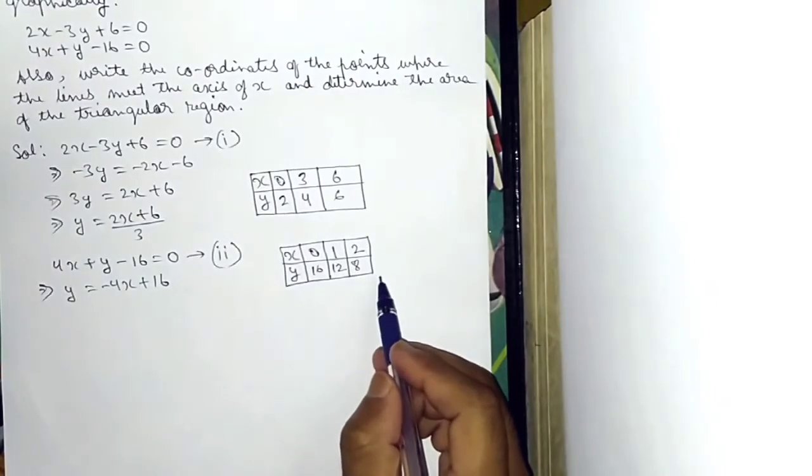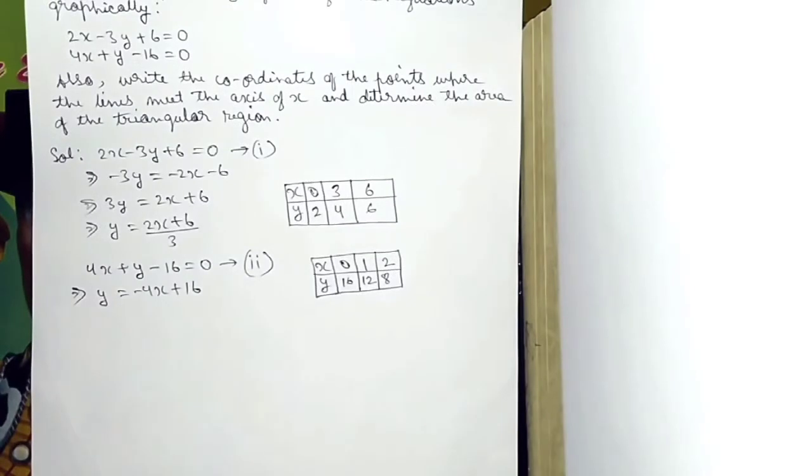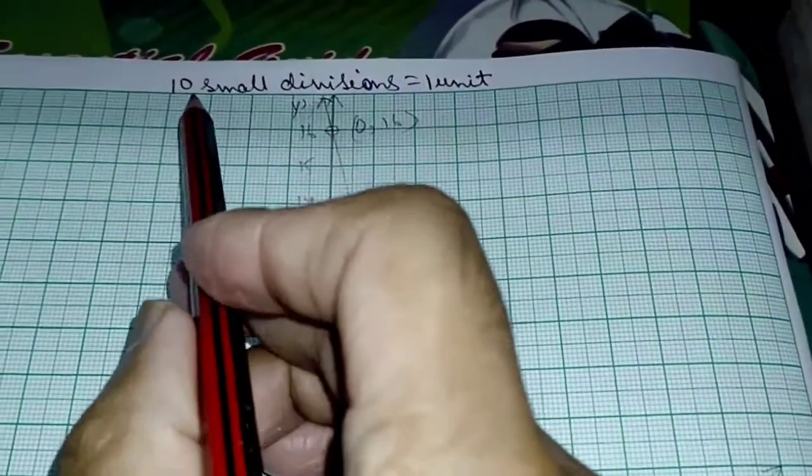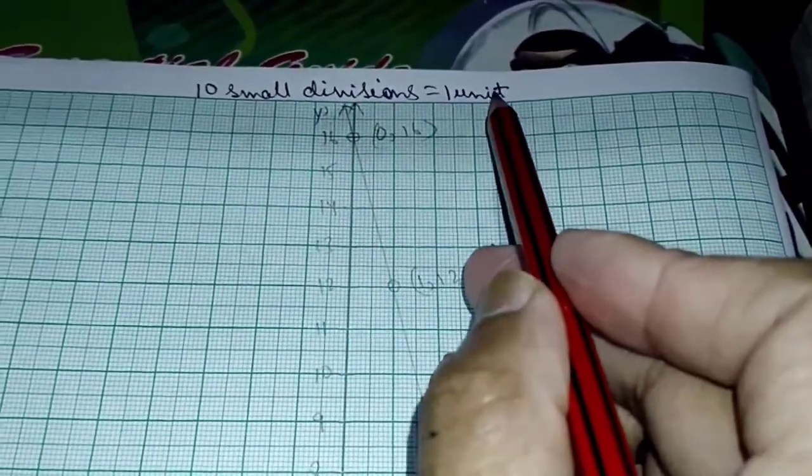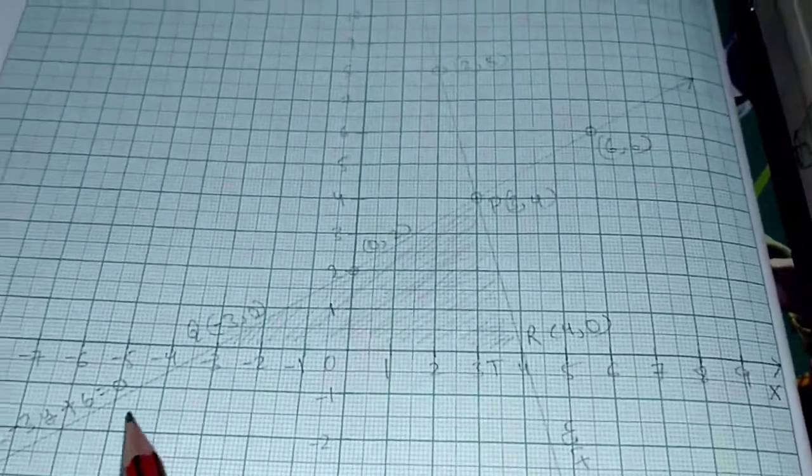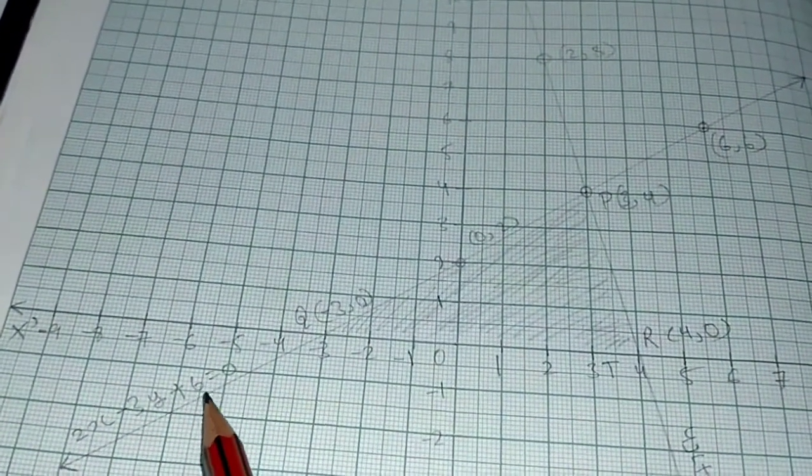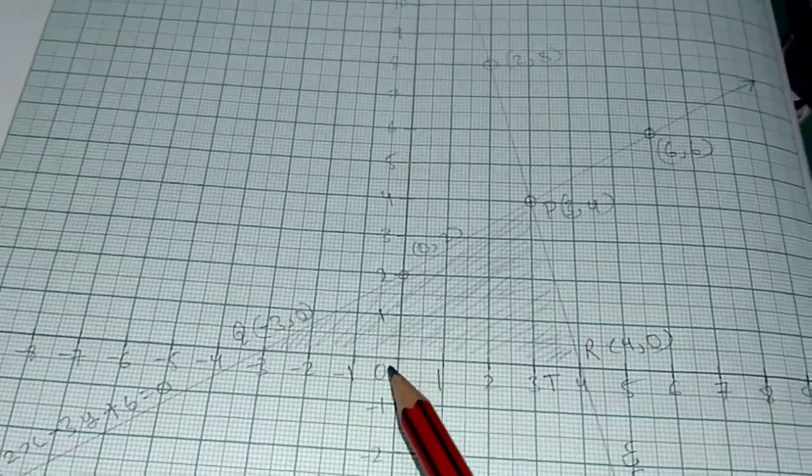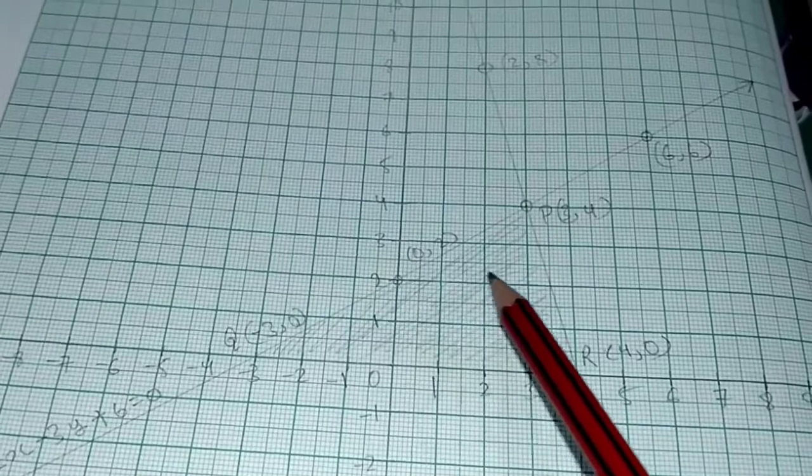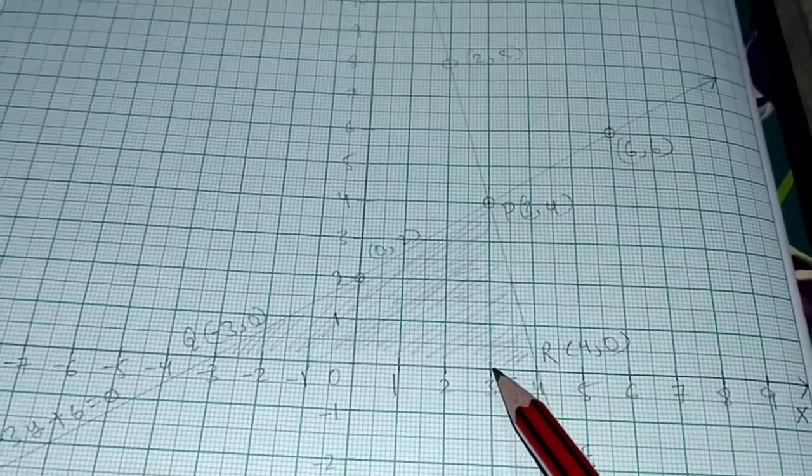Now we will draw the graph. The scale is 10 small divisions equal to 1 unit. For the first equation 2x minus 3y plus 6 equals 0, the first point is x is 0, y is 2. The next point is x is 3, y is 4.